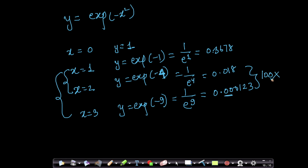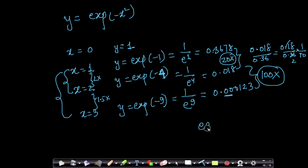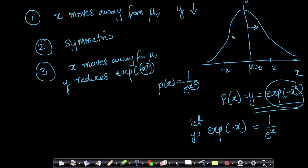Even though x increased only by 1.5 times, the reduction in y is 100 times. That is what I mean when I say exponentially quadratic drop. If it were just an exponential drop, it would not have been this severe. So the shape of your Gaussian distribution is one that falls exponentially quadratically — it reduces with a quadratic function inside the exponent, which means it falls really, really fast.